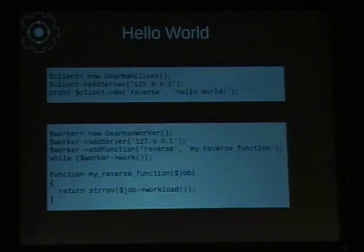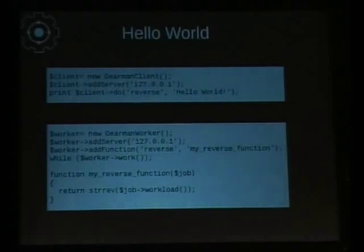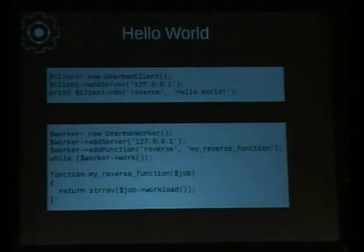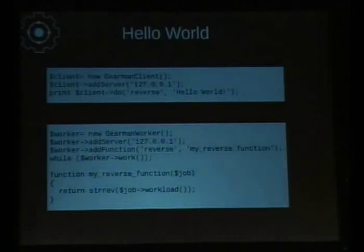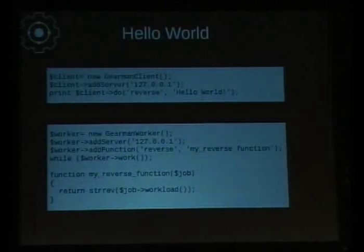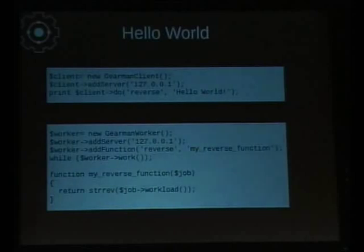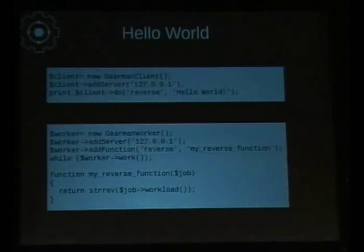Here's the first code example — the hello world of Gearman, in PHP, but pretty much identical in Perl or Python with obvious syntax changes. You create a Gearman client object, you add a server — this can be a comma-separated list of servers. You call a method on the client: do the function 'reverse', and the argument is 'Hello World'. In this case we're passing a string, but that argument can be any binary chunk of data up to four gigabytes. You can actually serialize anything — take a front-end web request, serialize it into JSON or XML, and ship that through.